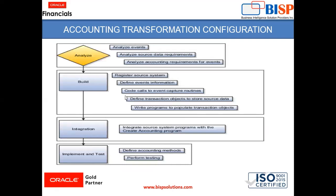The accounting transformation configuration follows four steps: Analyze, Build, Integration, and Implement and Test. Under Analyze: analyze events, analyze source data requirements, and analyze accounting requirements for events. Under Build: register the source system, define event information, code calls to event capture routines, define transaction objects to store source data, and write programs to populate transaction objects. Under Integration: integrate the source system program with the create accounting program. Under Implementation and Test: define the accounting method and perform testing.